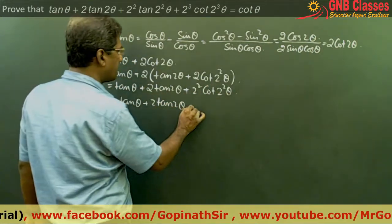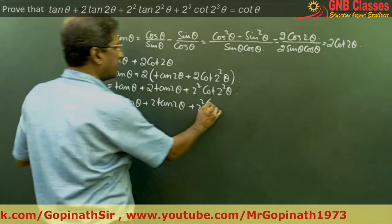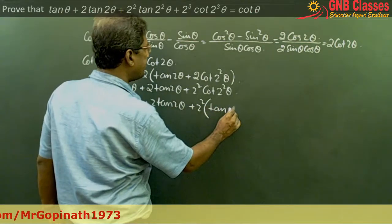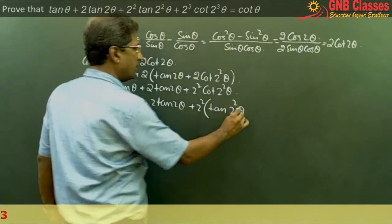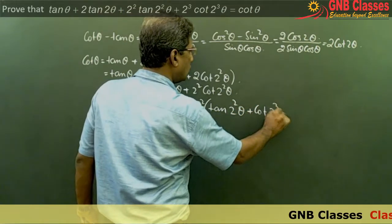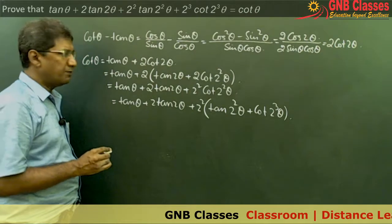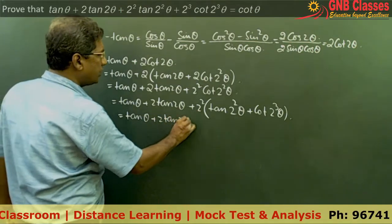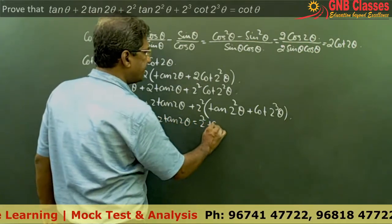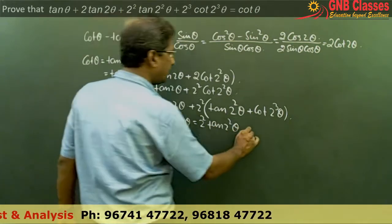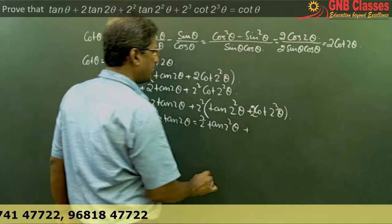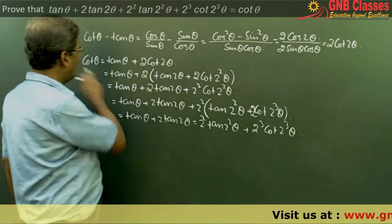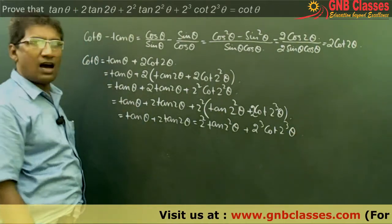Similarly, cot 2²θ can be replaced further. Opening the bracket we get tan θ plus 2 tan 2θ plus 2² tan 2²θ plus 2³ cot 2³θ. This is exactly what we need to prove.